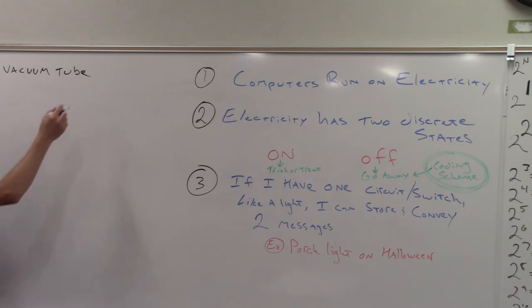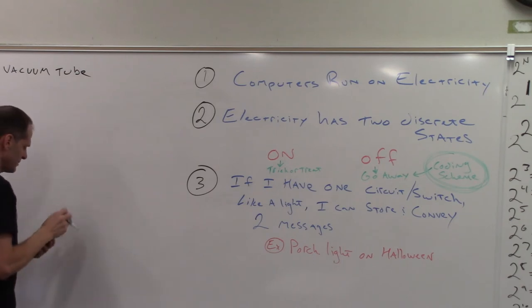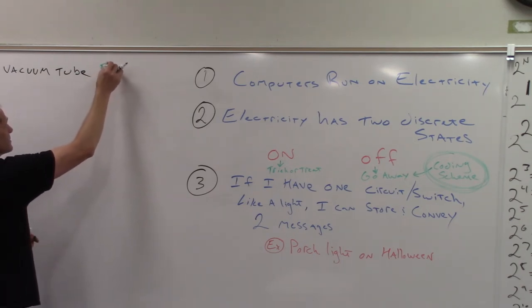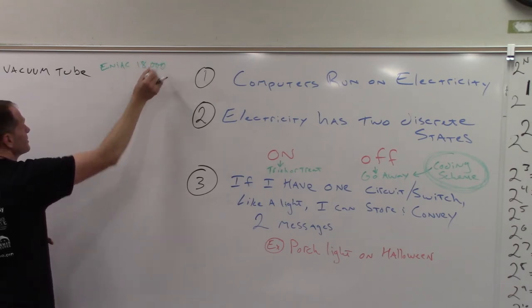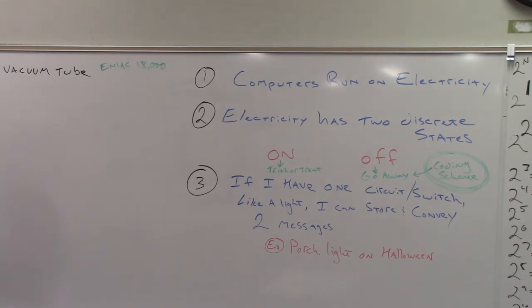So we have vacuum tubes storing our on-off state. And the first computer, the ENIAC, had 18,000 vacuum tubes. Vacuum tubes ran hot. Bugs would fly in, die next to a vacuum tube, and short out the computer. So they'd have to go debug the computer. True story. That's where debugging comes from. You actually pull the bugs out.